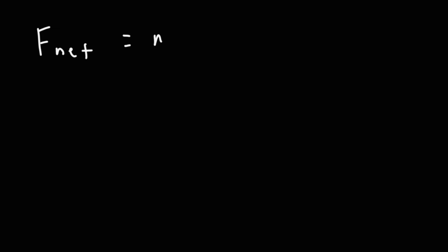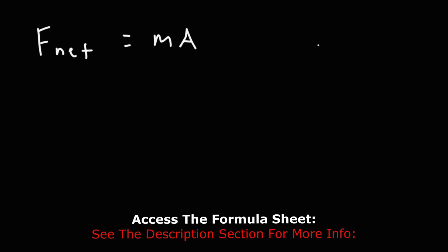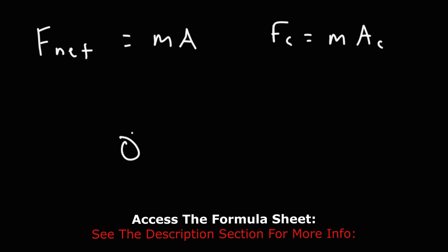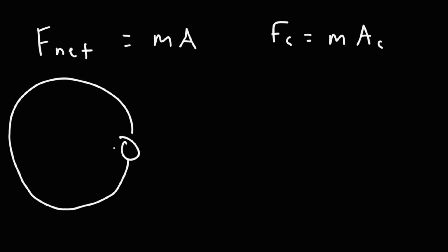Based on Newton's second law, the net force is equal to ma. The only acceleration we had was the centripetal acceleration. So when you multiply the centripetal acceleration by the mass, you get the centripetal force. Like the centripetal acceleration, the centripetal force always points towards the center of the circle. The centripetal force is equal to mv squared over r.